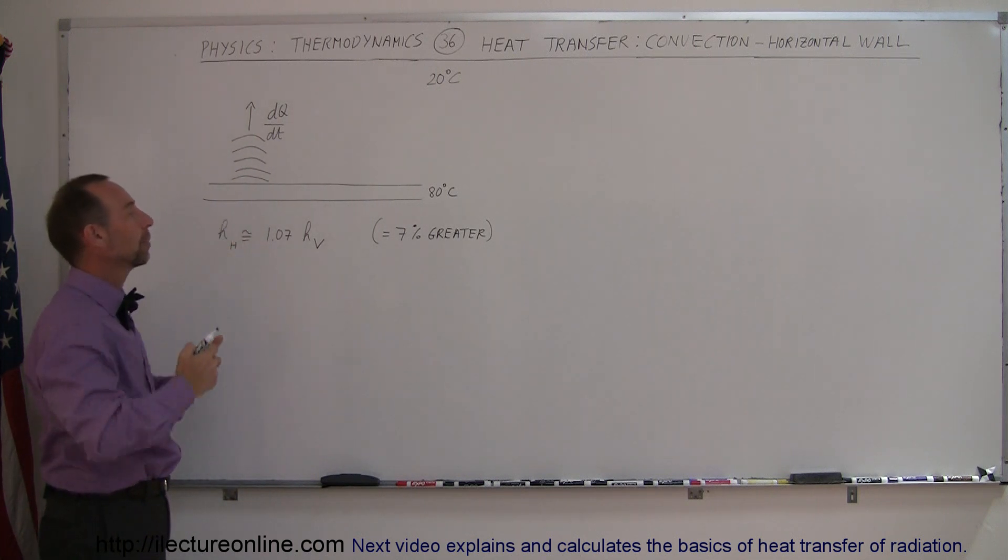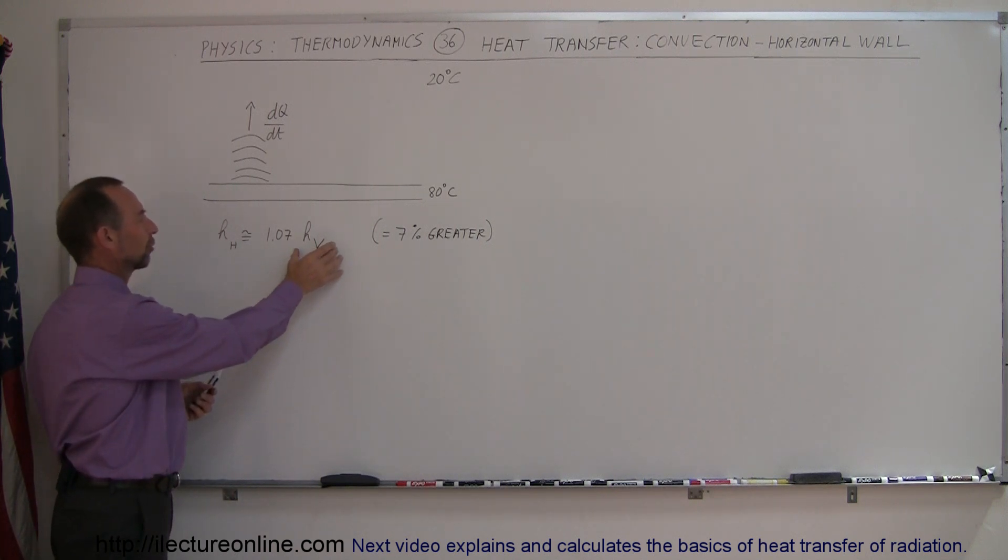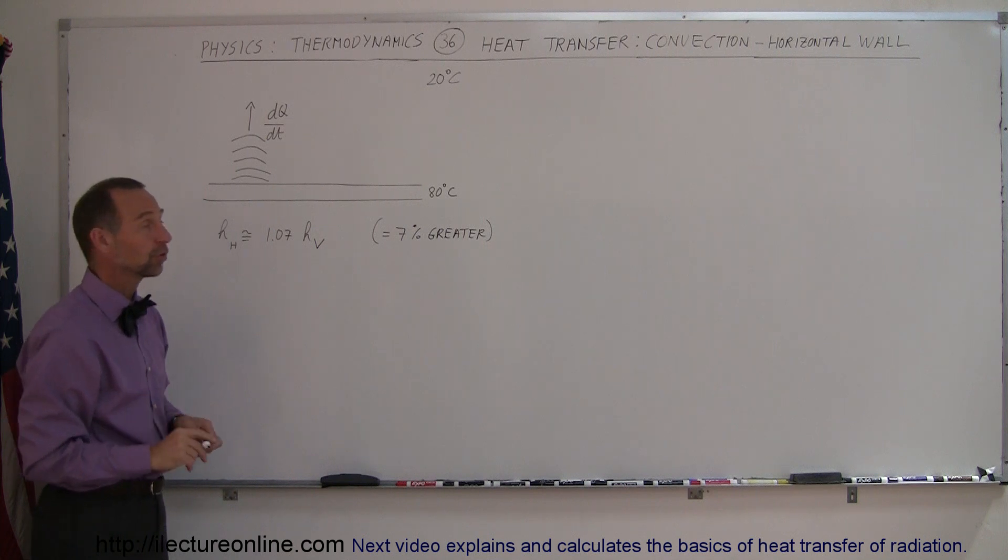Air currents are going to be welling up from the hot surface and moving heat away from the surface. Now, it turns out that the H for a horizontal surface is different from the H of a vertical surface. It's about 7% greater, so therefore we take whatever we have for the vertical surface and multiply times 1.07.